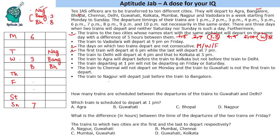The first train departs at 6 PM, so the second train on that day must depart after 6 PM — it can be 7, 8, 9, or 10 PM. Seven and eight are already filled. Vadodara departs at 9 PM on Friday, so 9 PM is taken. Therefore this train departs at 10 PM. Vadodara goes at 9 PM on Friday, which is the later of the two Friday trains since 10 PM is already placed. So Friday: 2 PM and 9 PM, with 9 PM going to Vadodara.